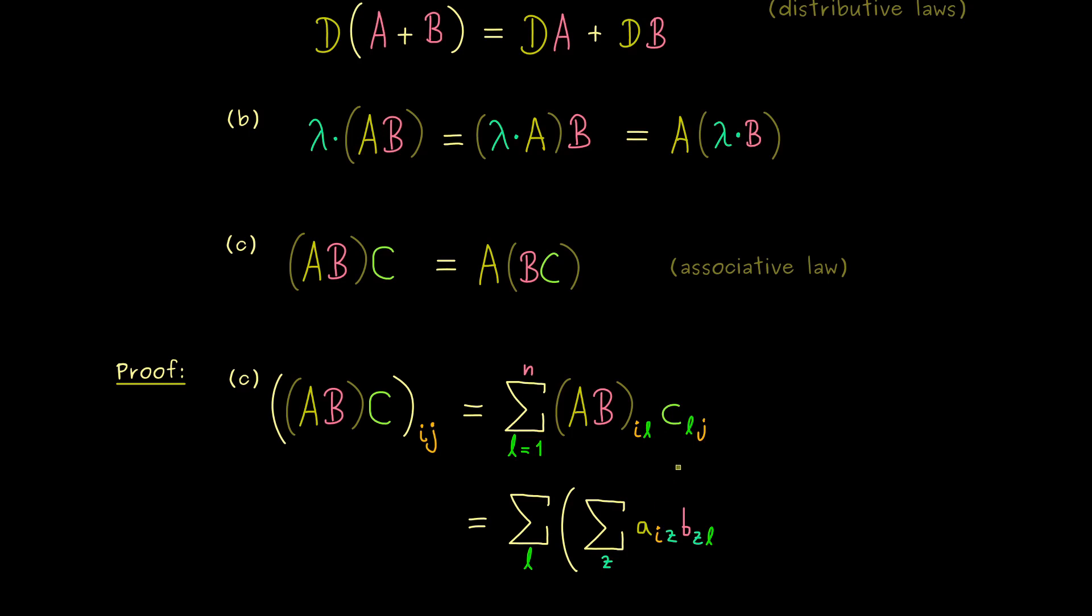But now, by using the definition of our matrix product here, with the correct indices, we get Aiz times BzL. Of course, here it's important that we use the correct indices.